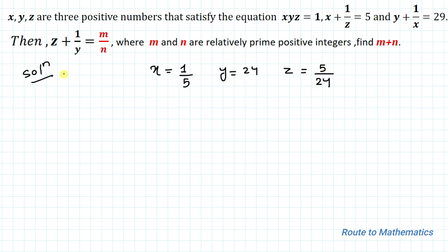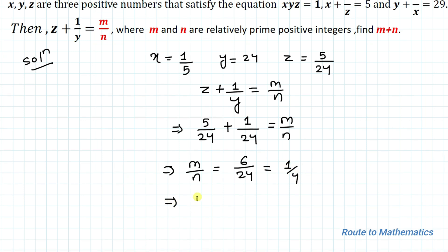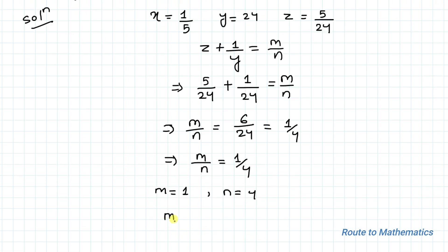We are given that z + 1/y = m/n. Substituting z = 5/24 and y = 24: 5/24 + 1/24 = 6/24 = 1/4. So m/n = 1/4. Since 1 and 4 are co-prime positive integers, m = 1 and n = 4. Therefore m + n = 1 + 4 = 5, which is our answer.